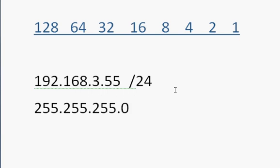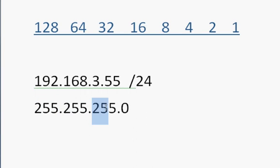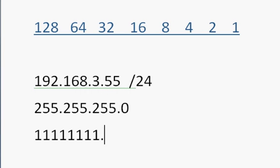Why is it called /24, and why does that relate to 255.255.255.0? Well, these are octets — each octet is 8 bits in length. So if we were to write out 255.255.255.0 in binary, it would look like this. There's the first octet, the second octet, and the third octet.